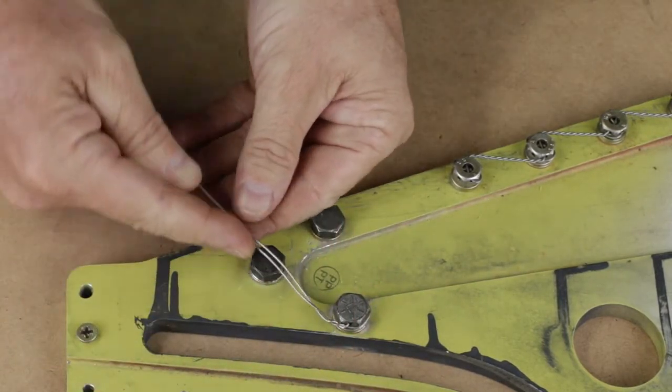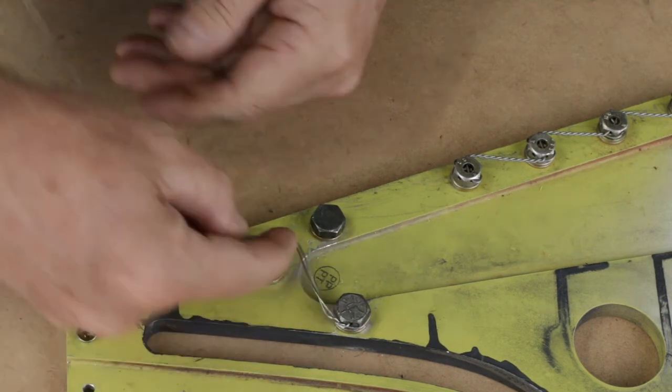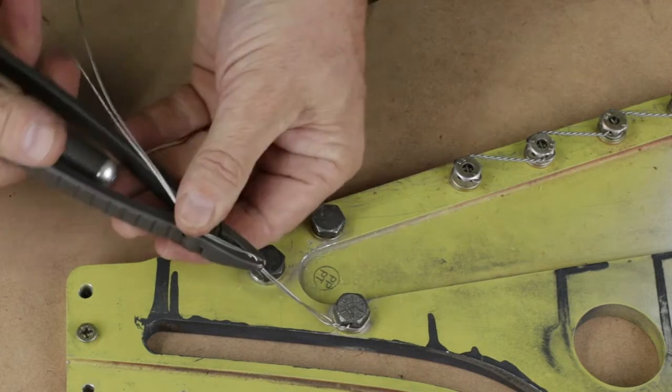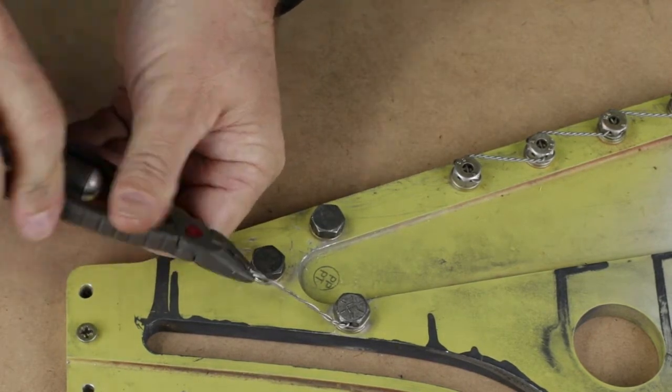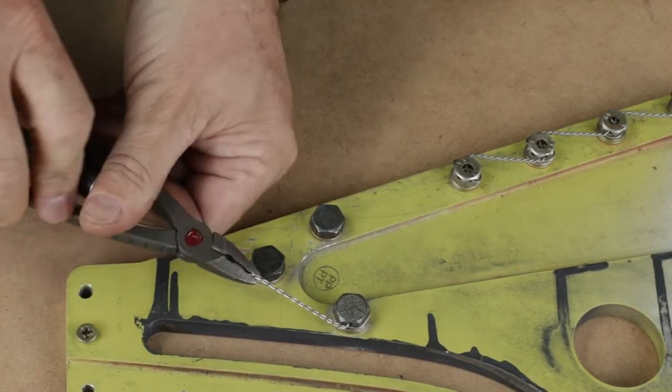Now I often do a couple of turns by hand just to start the process off. Once I've done that, I'm going to pull it round to the next bolt and where the hole is and just put a little nick with my finger. This helps us to know where to grab the wire with the pliers.